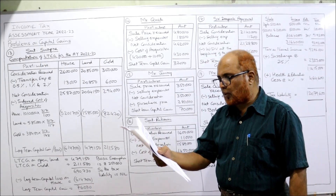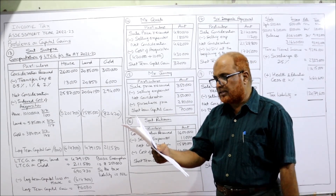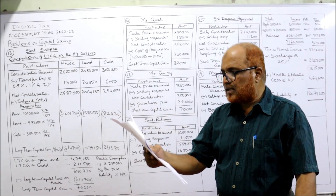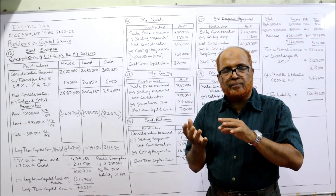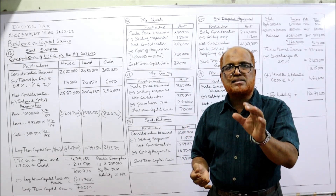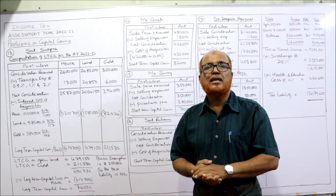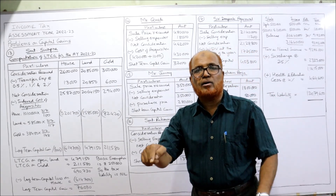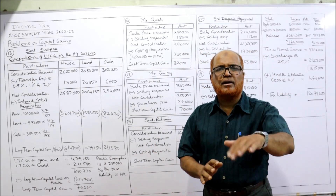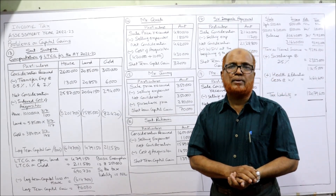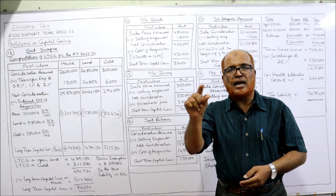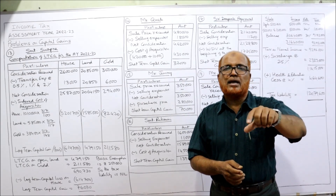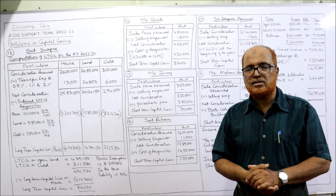Now see the 14th problem. During the previous year relevant to the current assessment year, Mr. Quick purchased a house for ₹4,20,000 and after 12 months he sold the same for ₹4,80,000. Brokerage paid to purchase the house: ₹10,000; to sell the house: ₹18,000. Calculate the capital gain. For a building or land, if held for 2 years or more it is long-term capital gain; if sold within 2 years it is short-term capital gain. Since Mr. Quick sold the building after only 12 months, the gain is short-term capital gain.